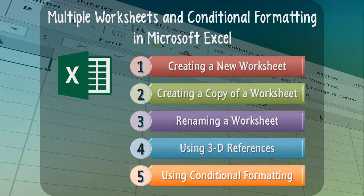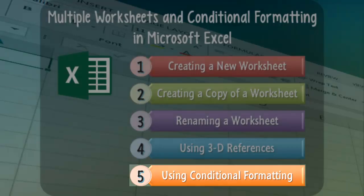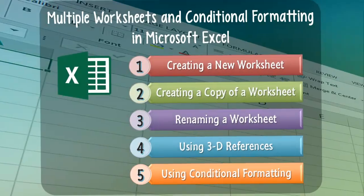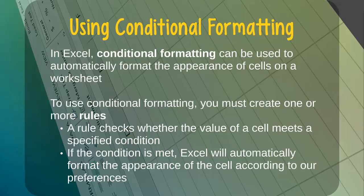Finally, let's learn how to use conditional formatting in Microsoft Excel. In Excel, conditional formatting can be used to automatically format the appearance of cells on a worksheet. To use conditional formatting, we must create one or more rules. In the context of conditional formatting, a rule checks whether the value of a cell meets a specified condition. If the condition is met, Excel will automatically format the appearance of the cell according to our preferences. Let's see a few examples of conditional formatting in Microsoft Excel.